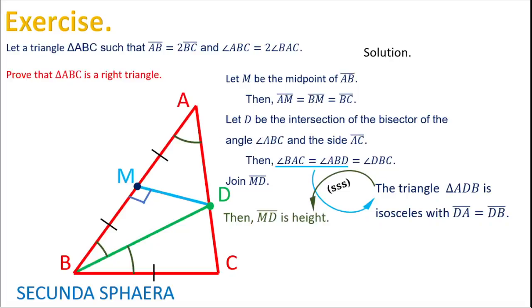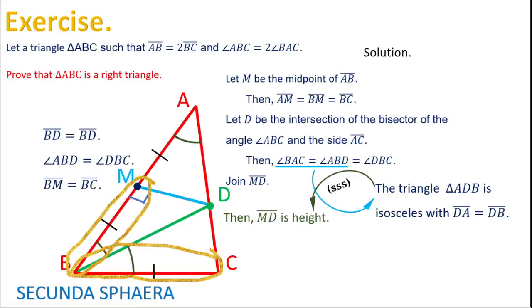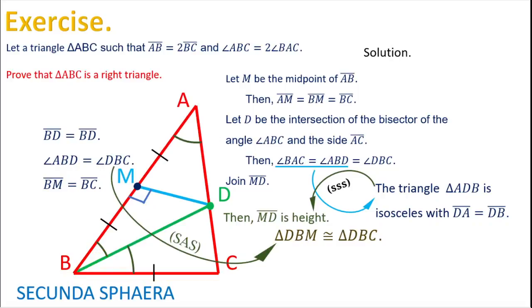Now, there is already all the information that is going to be necessary. So, in order for the next step, it is important to focus on the triangles BDM and the triangle BCD. So, from these triangles, the side BD is common. And also, the angle ABD is equal to the angle DBC. And also, it is already known that the side BM is equal to the side BC. So, we already have all the information for using the criterion of congruence side-angle-side, or SAS. And because of this, the triangles DBM and DBC are congruent.